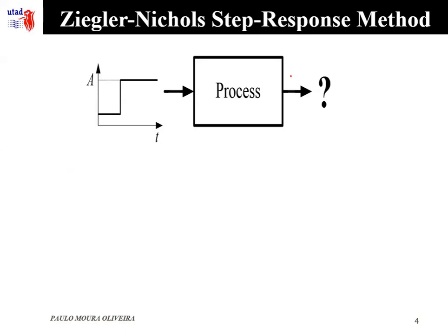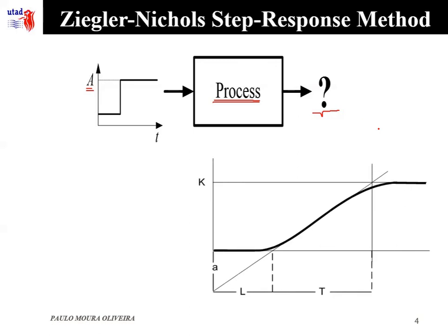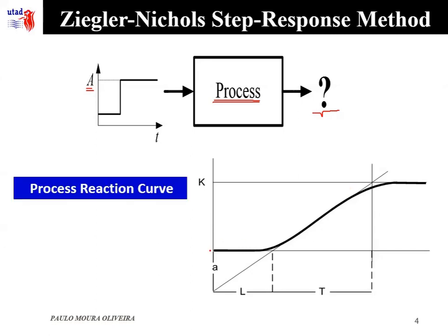The Ziegler-Nichols step response method works as follows: we consider the process to be controlled in open loop, and we apply a step input of amplitude A to the system, then observe the output. The step response for most industrial systems has a sigmoidal shape, known as the process reaction curve. From this curve, Ziegler-Nichols proposed modeling the system using a first-order plus time delay model, as shown in this equation.